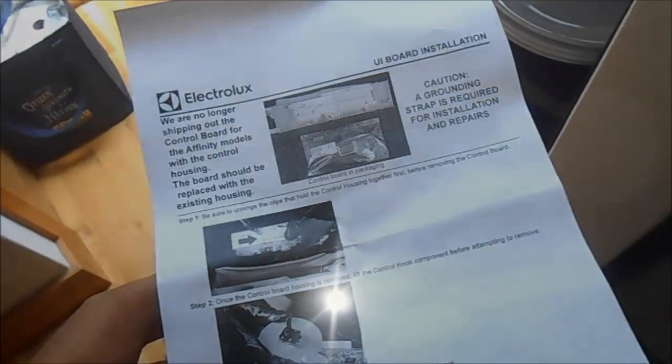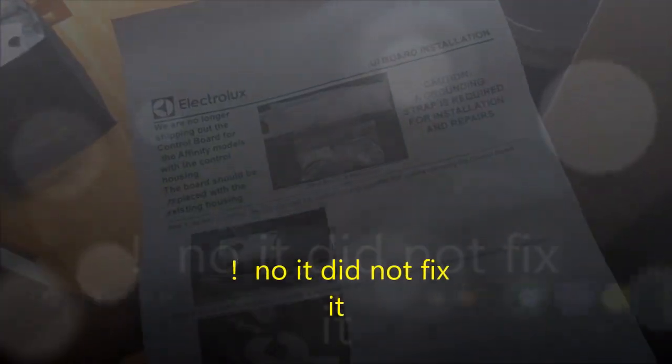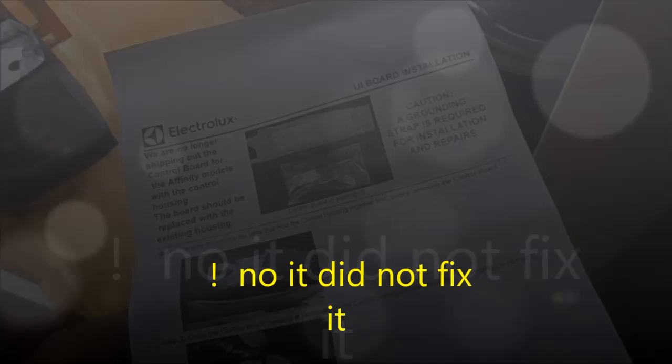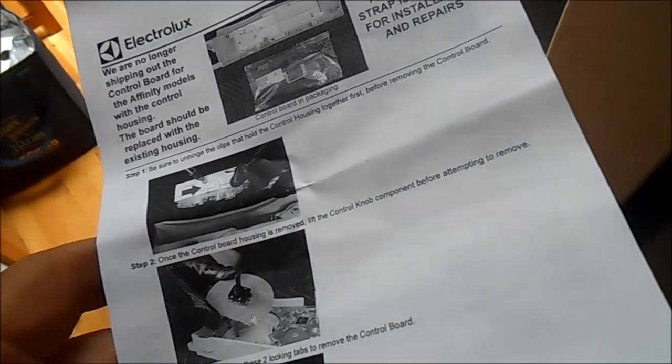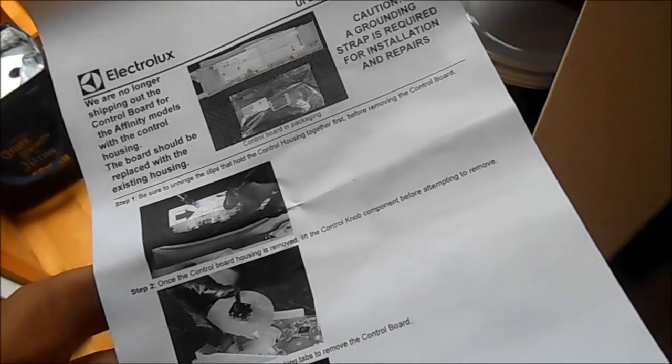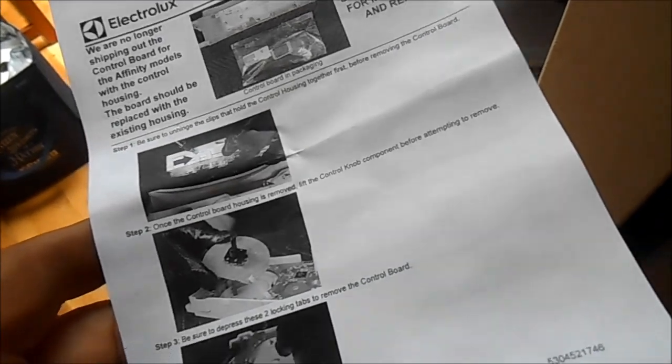There's not much instructions. Be sure to unhinge the clips that hold the control housing together before removing the control board. Once the control board housing is removed, lift the control knob component before attempting to remove. Whatever that means.